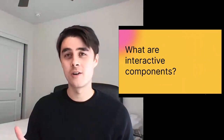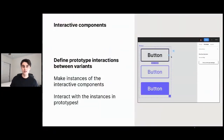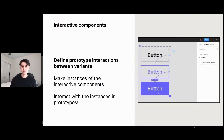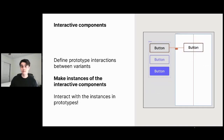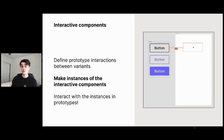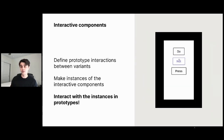So what are interactive components? Interactive components let you define prototype interactions between variants. You can see here we have this button with a few interactions wired up between the different variants. Then you can make instances of those variants in your screen designs, set overrides on them, modify them however you'd like. And then when you use those screen designs in your prototypes, each one of those instances becomes interactive. And you can see that it's also preserving overrides in these different states it's going through.